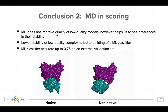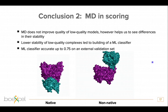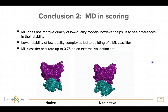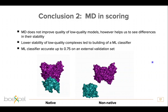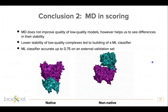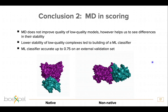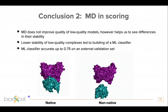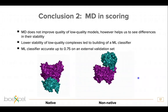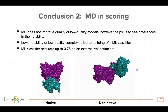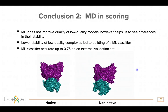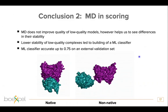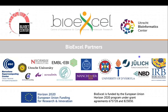To conclude the second part: MD does not improve the quality of the lower-quality complexes, however it can show the differences in behavior between native and non-native ones. We were able to build a machine learning classifier on top of this and get quite nice results also for the external validation set. The example movies show a native and a non-native model — in the non-native one, it really unbinds already after maybe 30 nanoseconds and goes through its periodic copy to find the partner on the other side of the box.